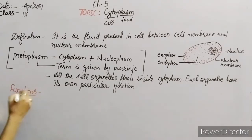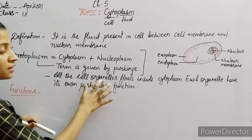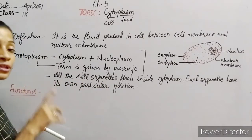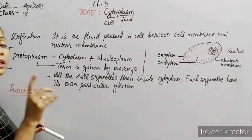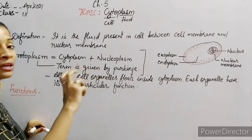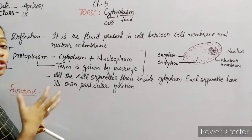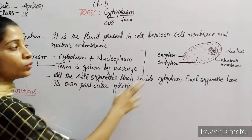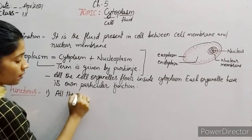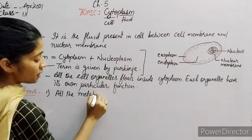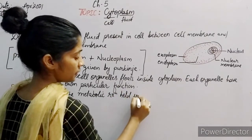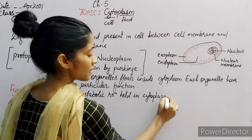What is the overall function of cytoplasm? The first function is: as it contains all the organelles, all the metabolic reactions that take place inside the cell and are essential for its survival are held in this cytoplasm.